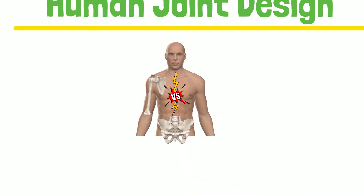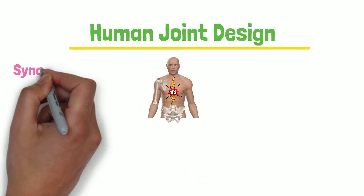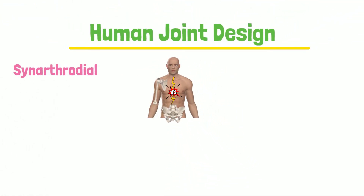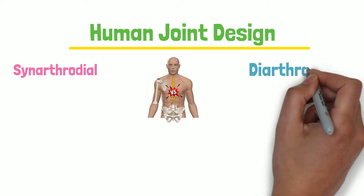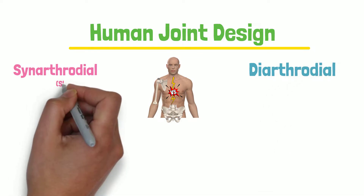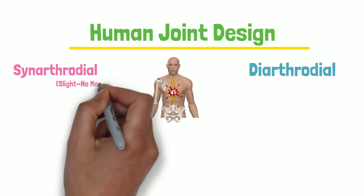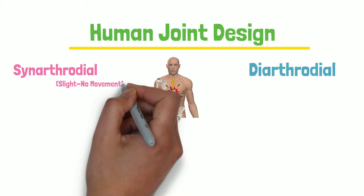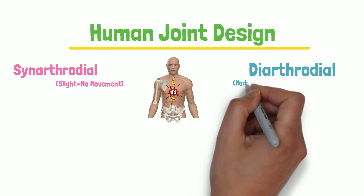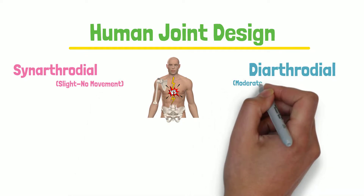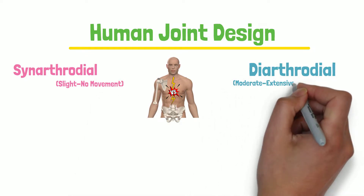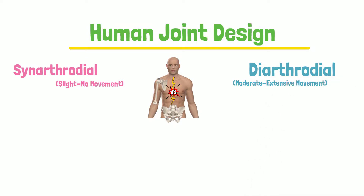Based on that, we have two general categories: synaphrodial and diarthrodial joints. Synaphrodial joints possess articulation which allows slight to essentially no movement. Diarthrodial joints possess articulation that allows moderate to extensive motion. These joints contain a joint cavity and we will examine more characteristics in just a moment.